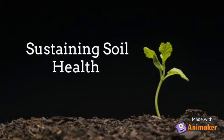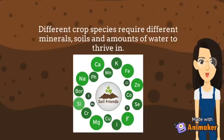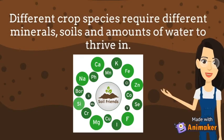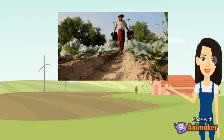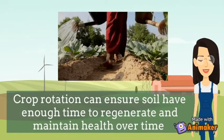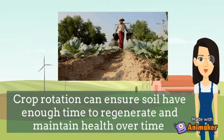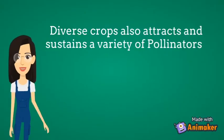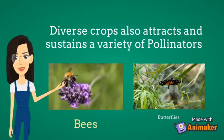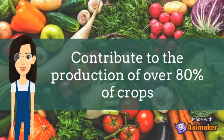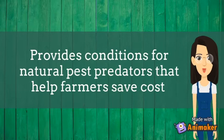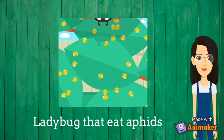Sustainability can be explained as sustaining soil health, as different crop species require different minerals, soils and amounts of water to thrive. Traditional farming techniques based on diversity such as crop rotation can ensure that soil has enough time to regenerate and maintain health over time. Diverse crops also attract and sustain a variety of pollinators such as bees and butterflies that contribute to the production of over 80% of crops. It also provides conditions for natural pest predators that help farmers save costs, including ladybugs that eat aphids.